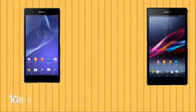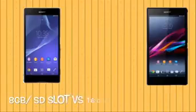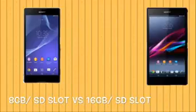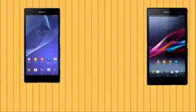Looking at RAM, we get 1 GB on the Sony Xperia T2 Ultra versus 2 GB on the Sony Xperia Z Ultra. For storage, the T2 Ultra has 8 GB of internal memory versus 16 GB on the Z Ultra. Both devices come with a microSD slot, supporting up to 32 GB and 64 GB respectively.